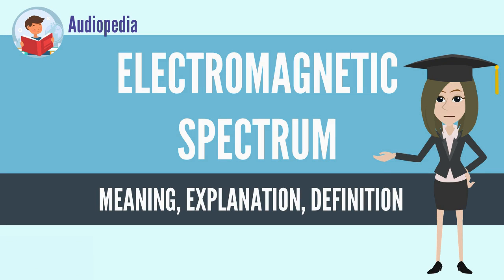The electromagnetic spectrum is the range of frequencies, the spectrum of electromagnetic radiation and their respective wavelengths and photon energies. The electromagnetic spectrum covers electromagnetic waves with frequencies ranging from below 1 Hz to above 10^25 Hz, corresponding to wavelengths from thousands of kilometers down to a fraction of the size of an atomic nucleus.